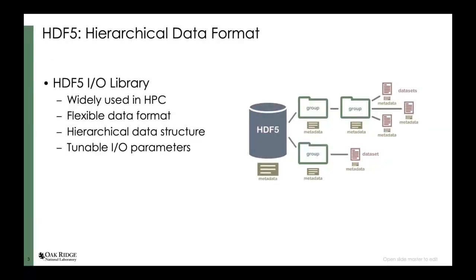Many of the applications choose to use IO libraries. HDF5 is one of the popular IO libraries, widely used in the HPC community because it provides highly flexible data formats and uses a hierarchical data structure. It's easy to interface with underlying storage systems and easy to extend the file format at different levels. Users can improve performance by tuning different IO parameters, but it requires solid knowledge about the underlying storage systems.